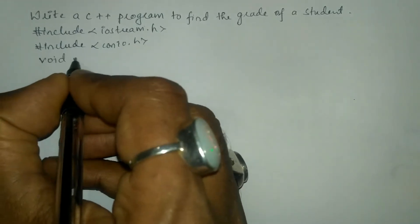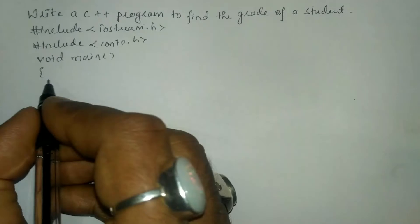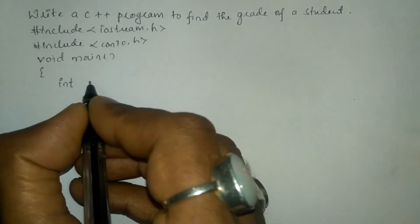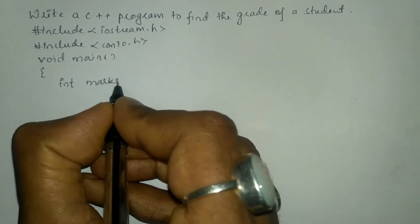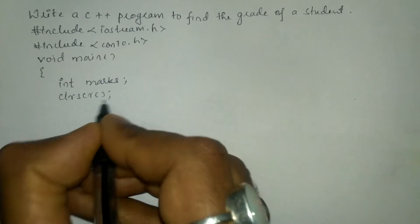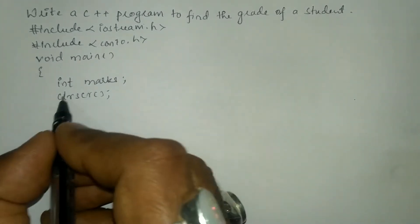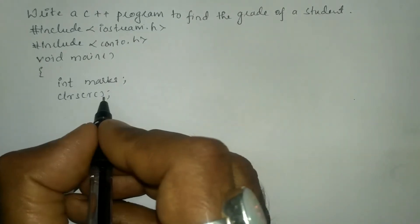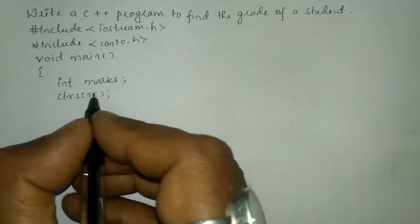Now let us write the void main function with an opening brace. In the declaration section I am going to declare a variable called int marks and put a semicolon. Now I'm going to write the clrscr() function, which is used to clear the screen. It has to be written after declaring the variables, and this function is optional — you can write it or omit it.